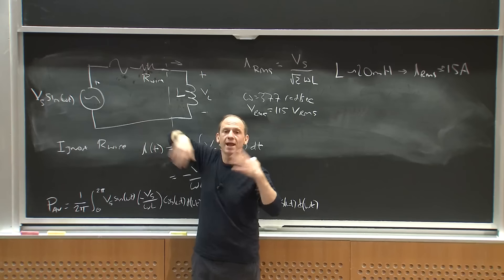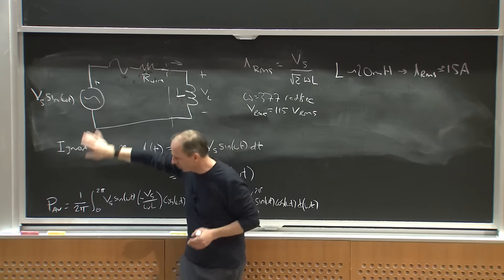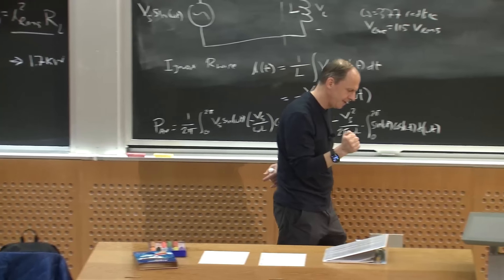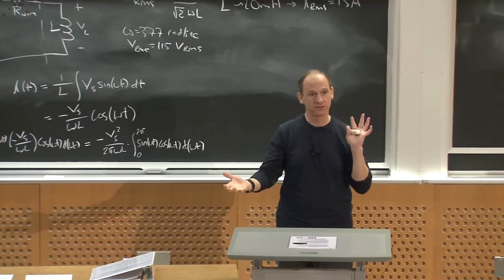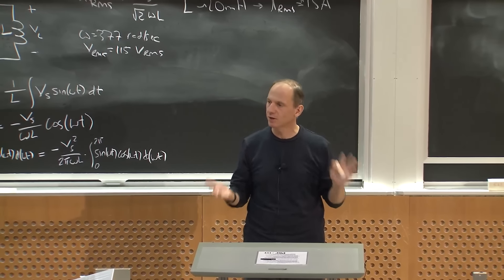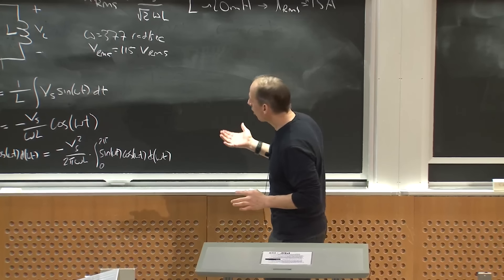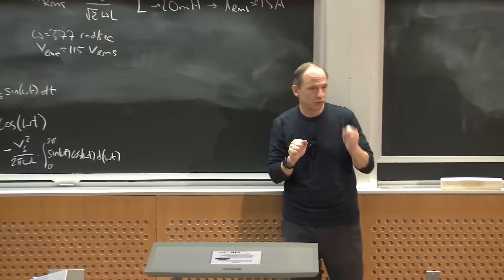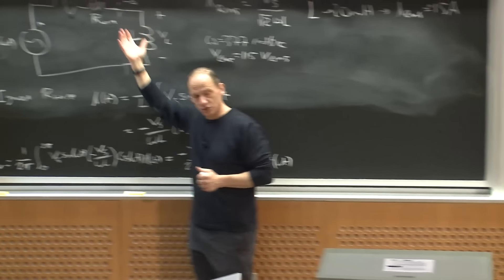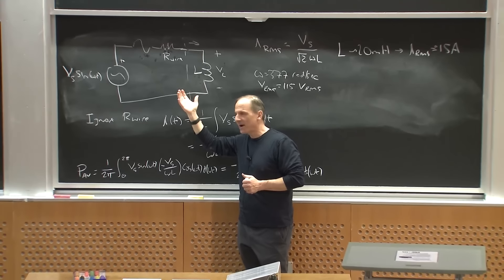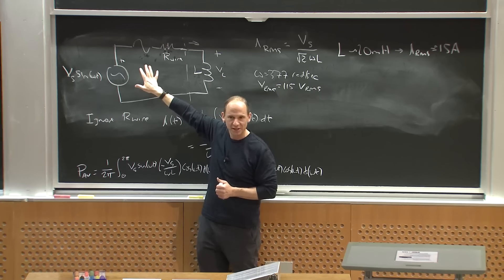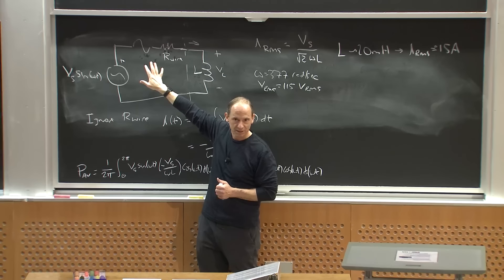If I plug in a 21 mH inductor, life's good. But a 19 mH inductor would trip the breaker. With my 20 mH inductor using the full 15A RMS, I have two outlets but if I also want to plug in my space heater I'm out of luck — I'm already at the breaker limit. Plugging in the inductor hasn't used any average energy, but it has degraded my ability to draw power from the source.